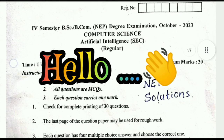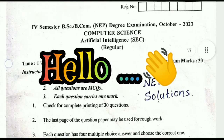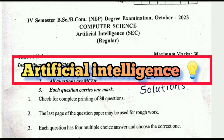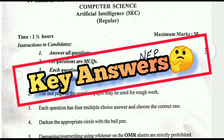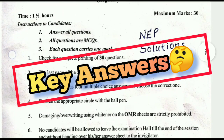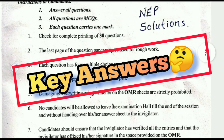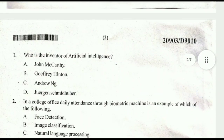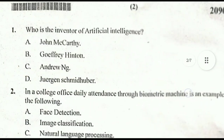Hello friends, welcome to NEP Solutions. Today we have a BS 4th semester Artificial Intelligence multiple choice question paper with answer key. First question: who is the inventor of artificial intelligence? The correct answer is John McCarthy, option A.